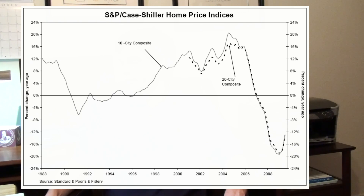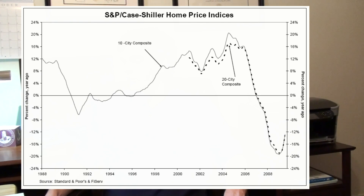Subprime borrowers who had purchased adjustable rate mortgages were unable to refinance when their rates reset or teaser periods expired. Borrowers who had interest-only loans or put too little money down saw their monthly payments increase far beyond their means to pay.